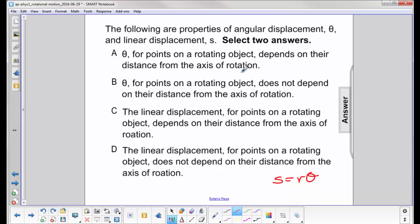Let's go through these one at a time. Theta for points on a rotating object depend on their distance from the axis of rotation. No. Theta is constant for every point on the rotating axis. So that means this one is correct. It doesn't depend on the distance from the axis of rotation.